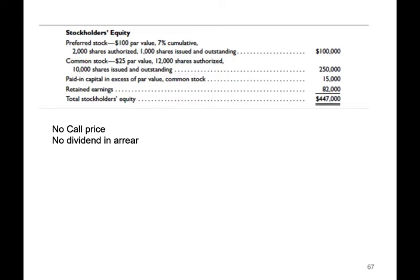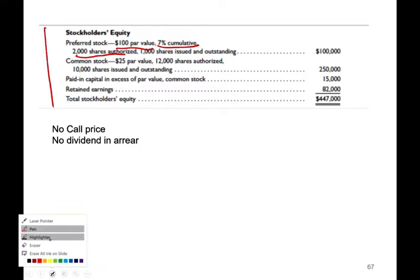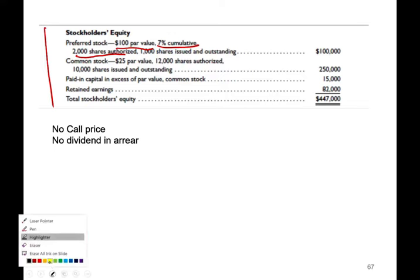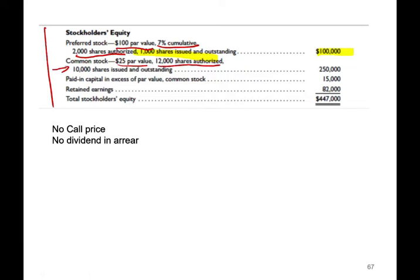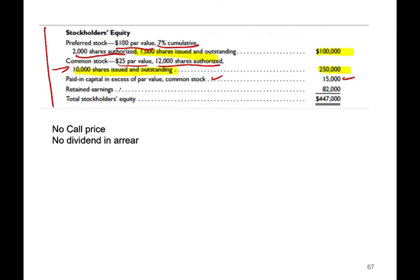Let's take a look at an example to see how we mechanically compute the book value per share. We have preferred stock at $100 par value, 7% cumulative, with 2,000 shares authorized, of which 1,000 are issued and outstanding, for a dollar amount of $100,000. Then we have common stock at $25 par value, 12,000 shares authorized, of which 10,000 are issued and outstanding, valued at $250,000. We also have paid-in capital of $15,000, retained earnings of $82,000, giving total stockholders' equity of $447,000.